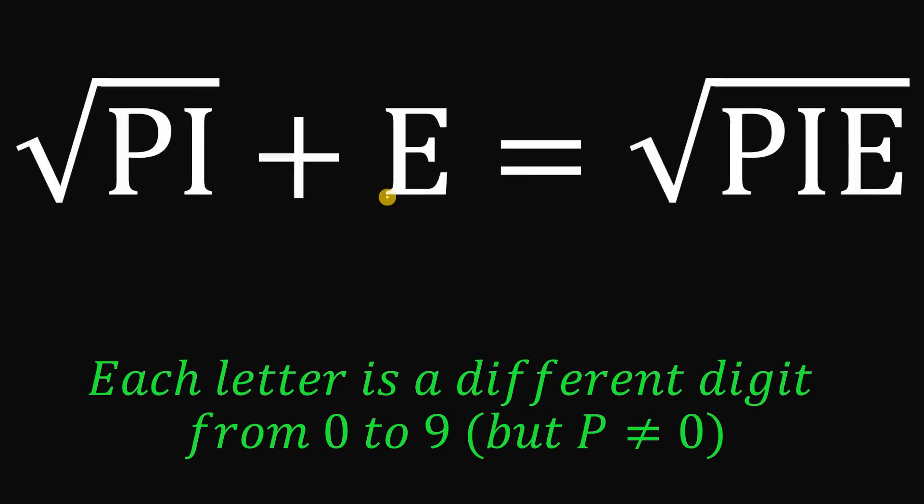Square root of PI plus E equals square root of PIE. So each letter is a different digit from 0 to 9, but P is not equal to 0. So meaning, this PI is a two-digit number, and this PIE is a three-digit number.